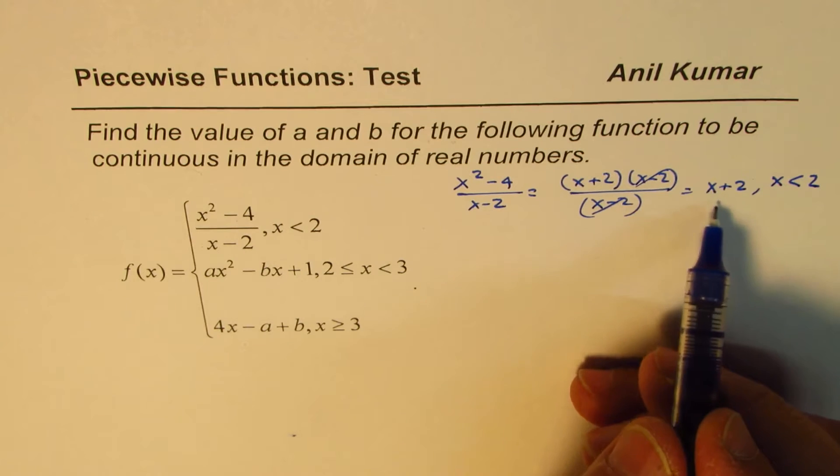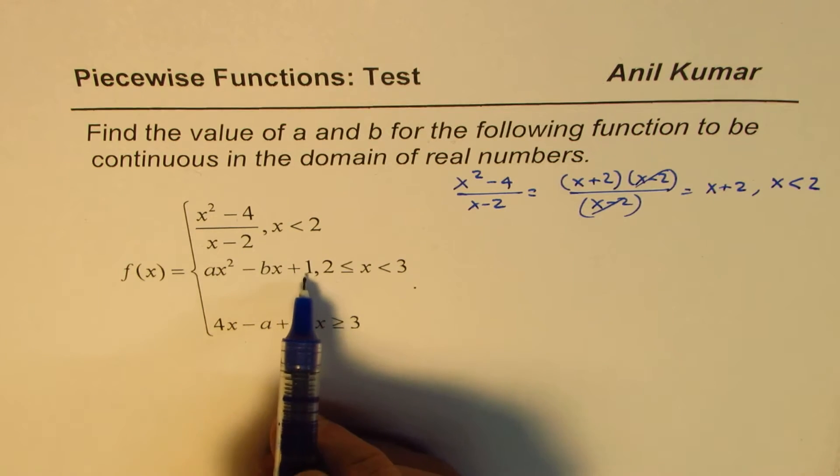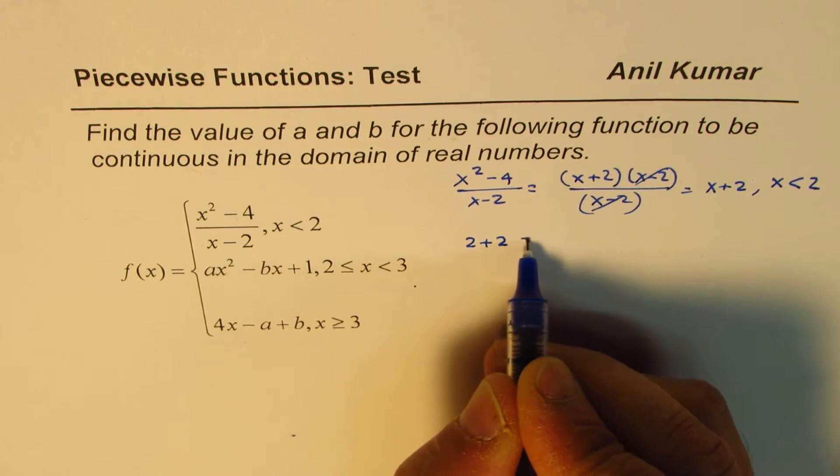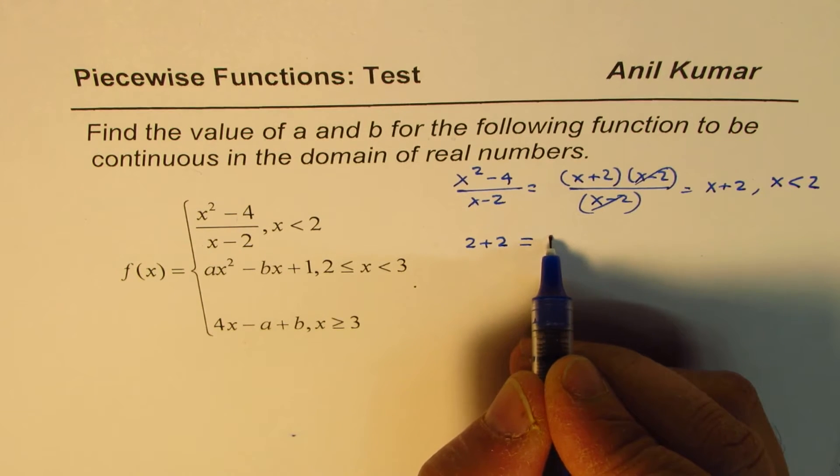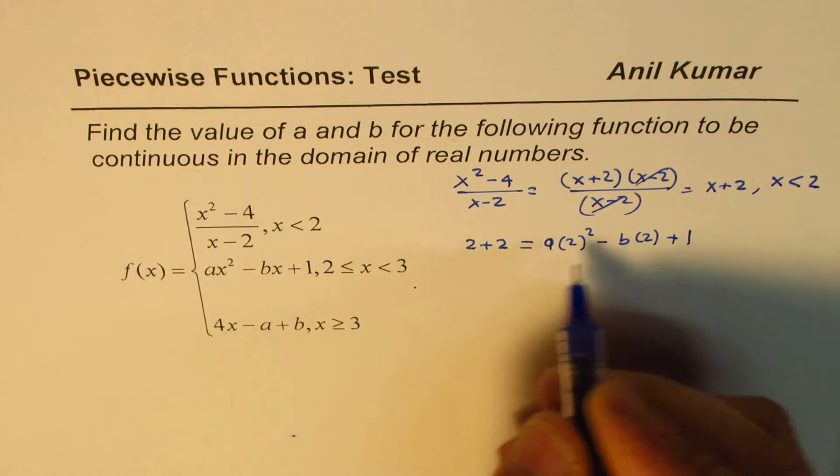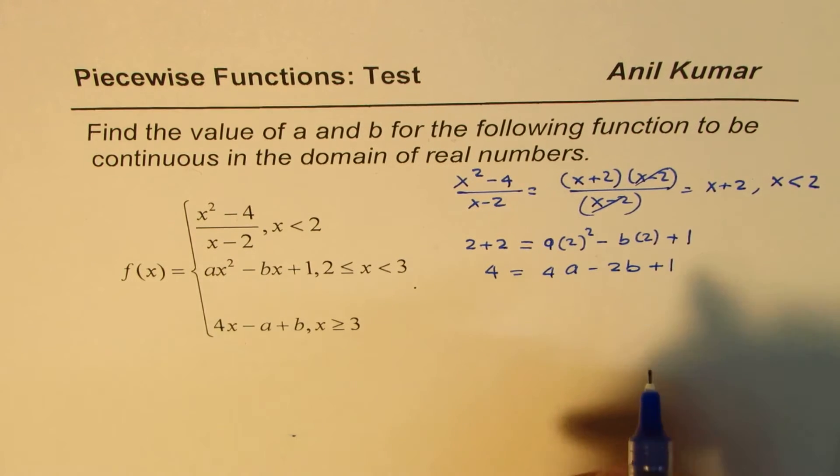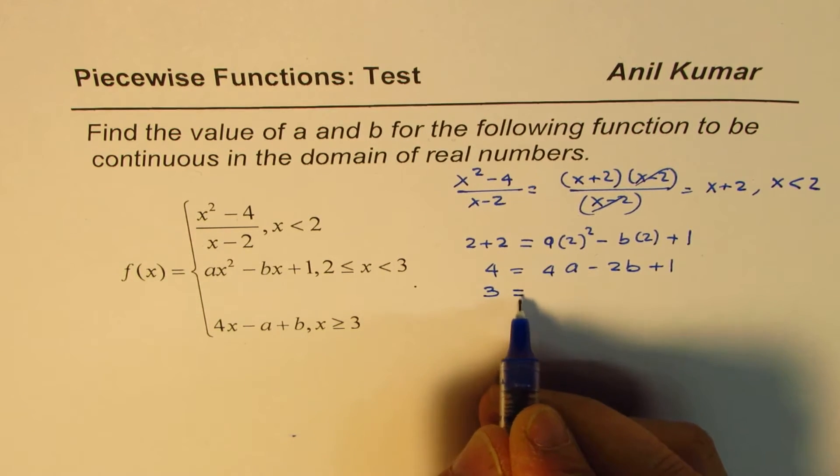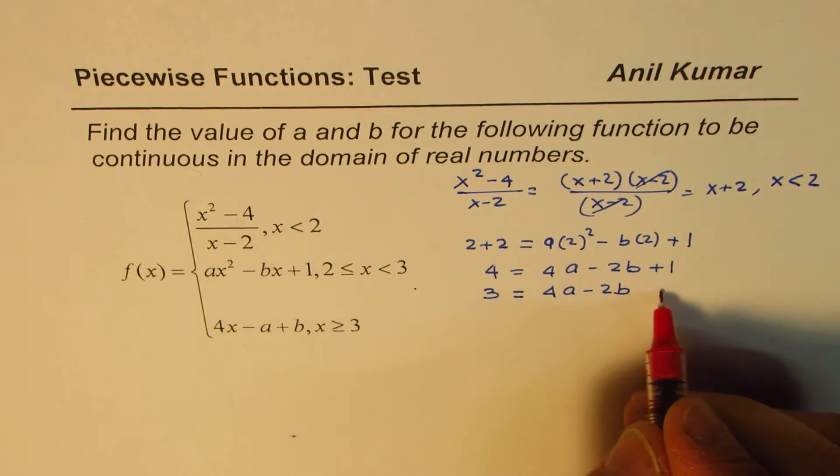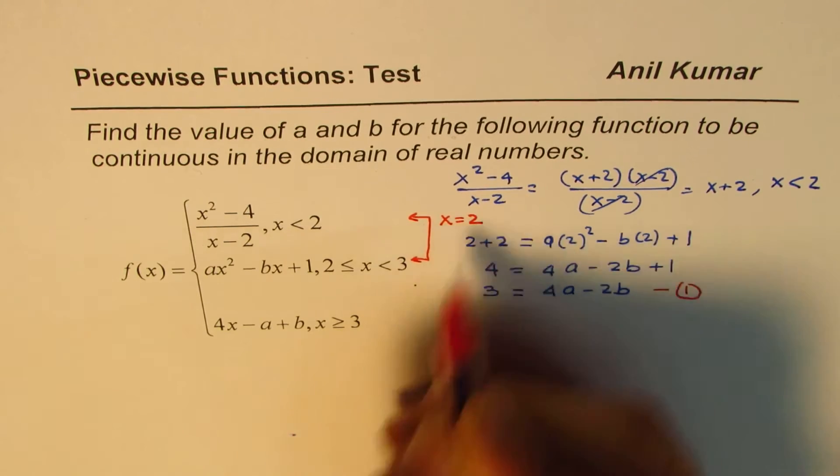Now, the idea is, what is the value of this function at 2? It should be seen as the value of a x square minus b x plus 1 at 2. So we can substitute 2 here. So we get 2 plus 2 should be equal to, substituting 2 here, we get a times 2 square minus b times 2 plus 1. Or we say 4 equals 4a minus 2b plus 1. Taking 1 to this side, we get 3 equals 4a minus 2b. So with that, we get one equation. This equation we get from these two, analyzing at x equals to 2.